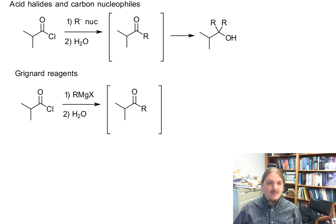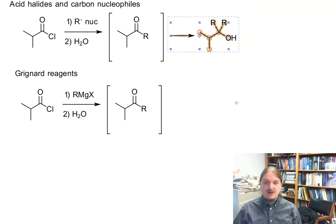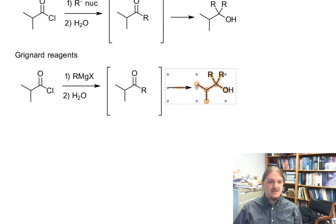If you've already learned about the Grignard reagents, which most people have by this point, you know that Grignard reagents also react with ketones to make tertiary alcohols.